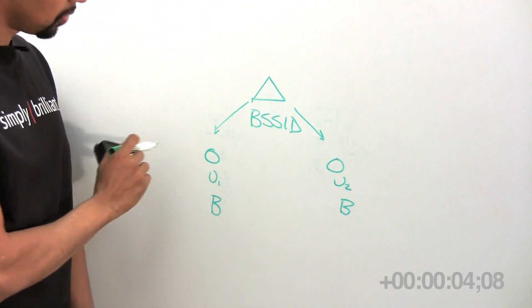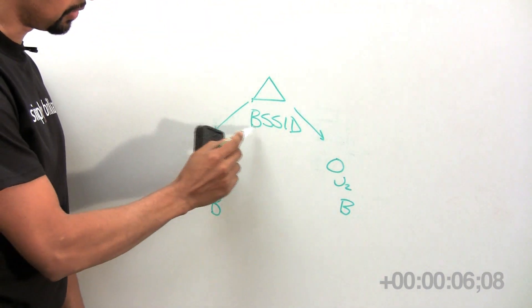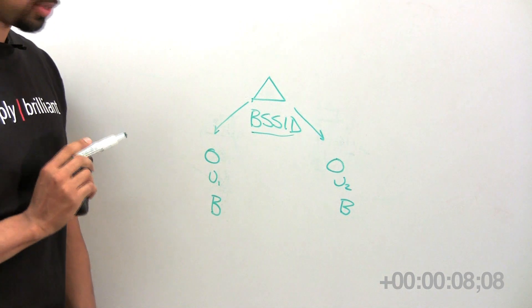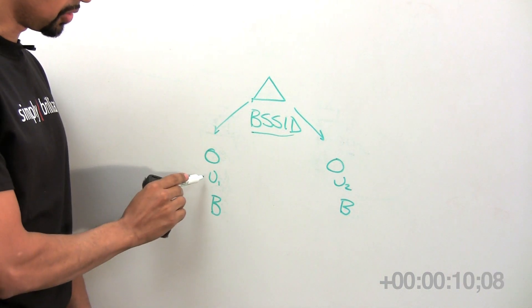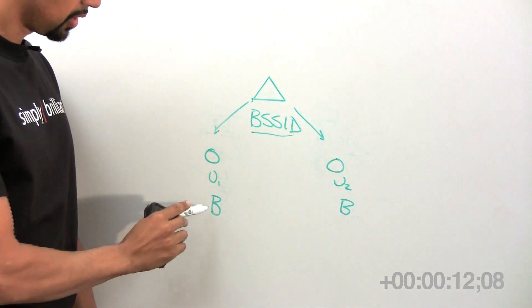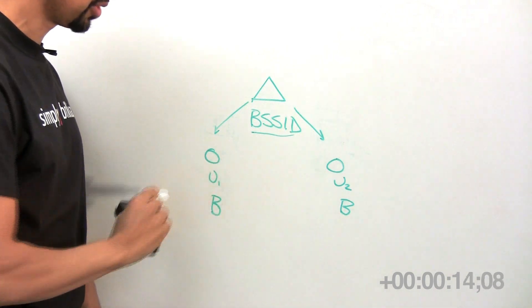So the genesis of hole 196 is the fact that a single AP has a single BSS ID, there's a unique key for each user and a broadcast key that is shared among all users.